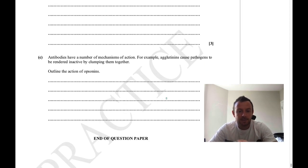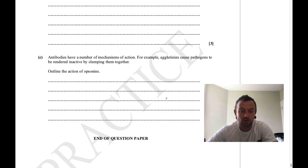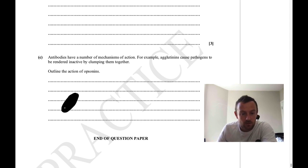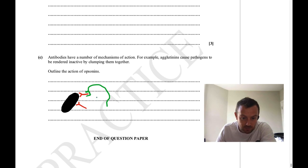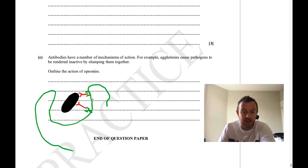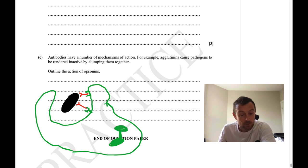Final question: outline the action of opsonins. An opsonin is an antibody that attaches to a bacterium on one end, and at its other end attaches to a receptor on the surface of a white blood cell — such as a neutrophil. This brings the white blood cell into contact with the bacterium so that the white blood cell can engulf and digest the whole complex via phagocytosis.